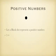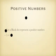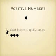Positive Numbers. Let a black dot represent a positive number. So if you have 5, that would be represented by 1, 2, 3, 4, 5.